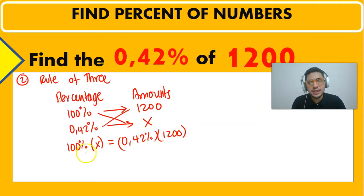So remember, 100% is the same as 1 multiplied by X is going to be equal to 0.42%, which is 0.42 divided by 100 times 1,200.